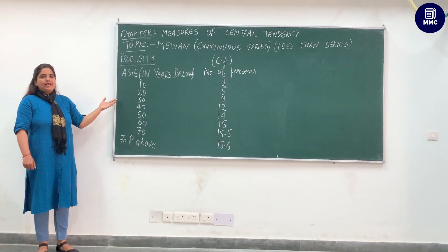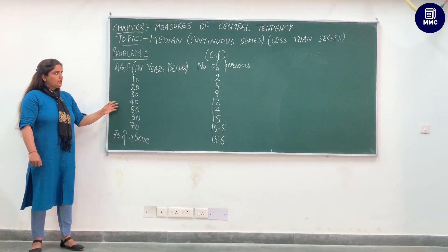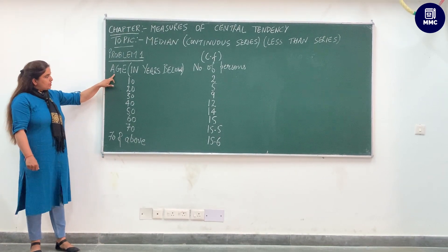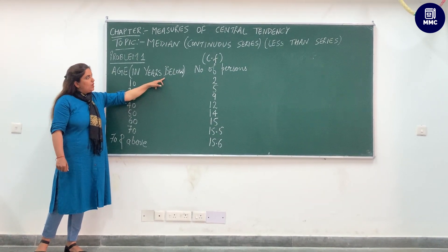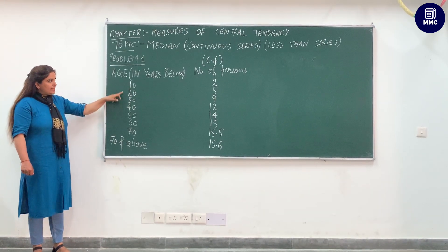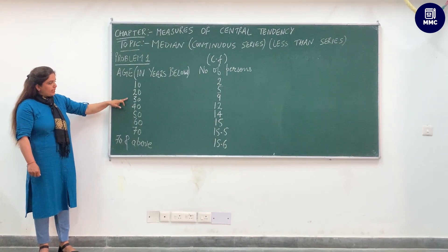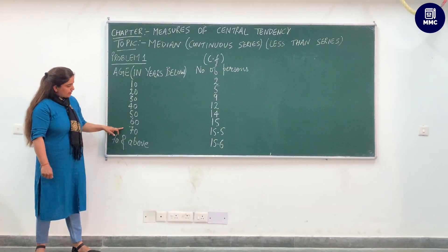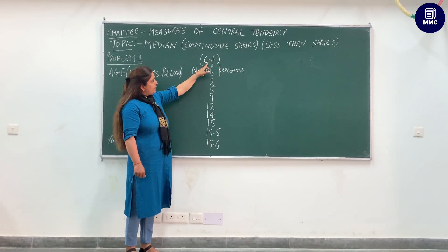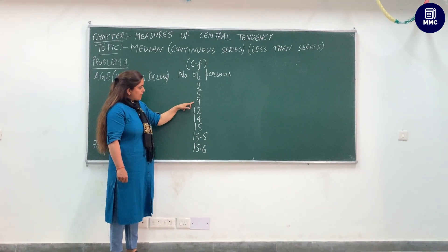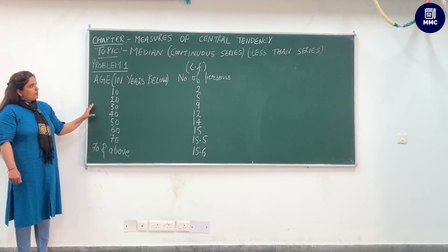Median actually divides the given series into two equal parts. Today we will do the numerical portion only. What is given in the question: age in years, and with 'below' — because we are dealing with the less than series — data below age 10, below age 20, below age 30, and so on. The cumulative frequency (CF) is given as 2, 5, 9, and so on.